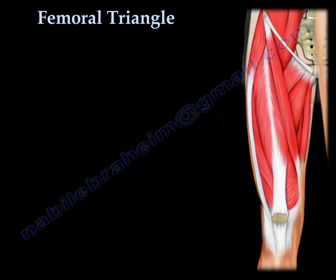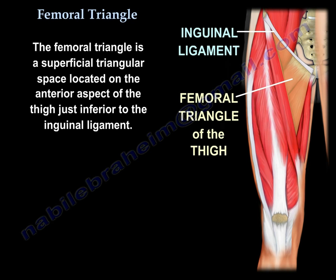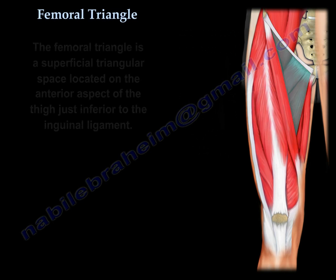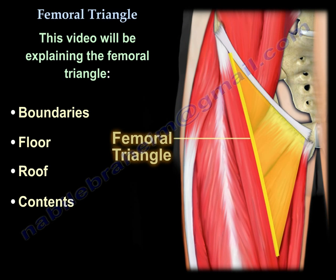The femoral triangle is a superficial triangular space located on the anterior aspect of the thigh, just inferior to the inguinal ligament. In this video, we will be explaining the boundaries, floor, roof, and contents of the femoral triangle.